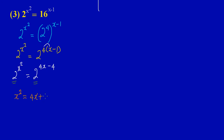Equating the powers: x squared equals 4x minus 4. This is a quadratic equation. I'm not going to teach solving quadratics in detail here — if you're unsure, check out our playlists on quadratics. To solve, I take all terms to the left and set equal to zero: x squared minus 4x plus 4 equals 0.